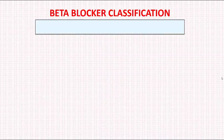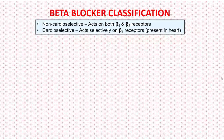We know that beta blockers are either non-cardioselective or cardioselective. By non-cardioselective we mean that they act on both beta 1 receptors in the heart and beta 2 receptors elsewhere in the body. By cardioselective we mean that they act mainly on beta 1 receptors in the heart.